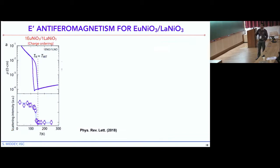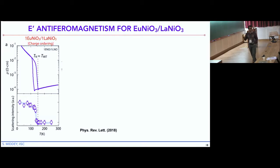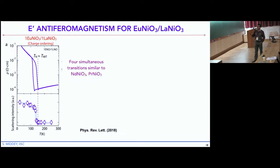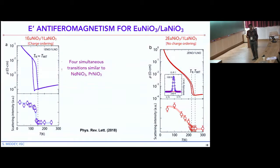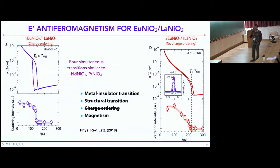For the 1:1 superlattice, magnetic ordering appears at the same temperature as the metal-insulator transition — four simultaneous transitions again. But for the 2:1 superlattice, where we showed there is no charge ordering and no structural transition, the Néel temperature is approximately 25 K lower than the metal-insulator transition temperature — around 220 K versus 245 K. This confirms that magnetism is also not responsible for the metal-insulator transition in this system.